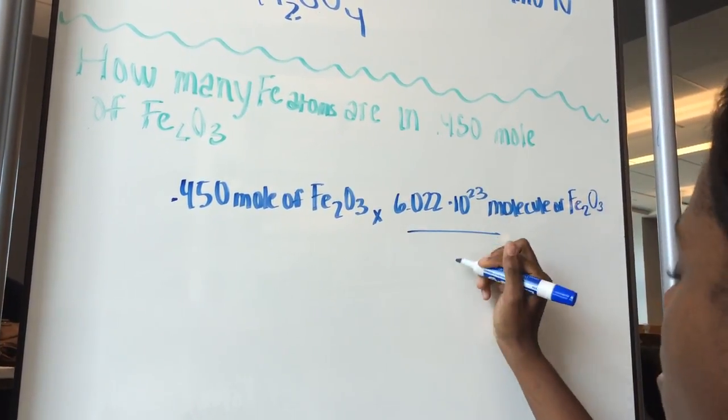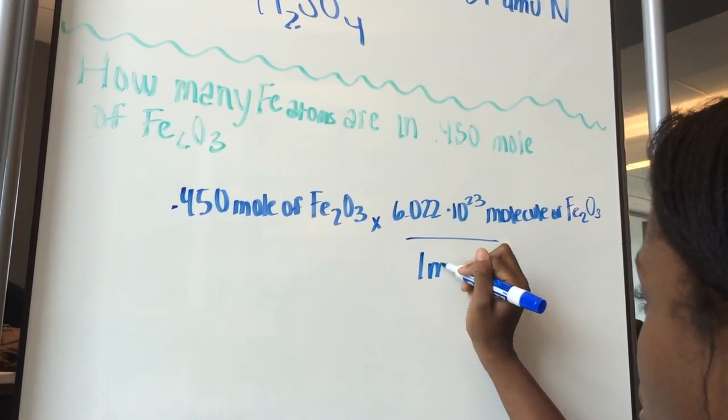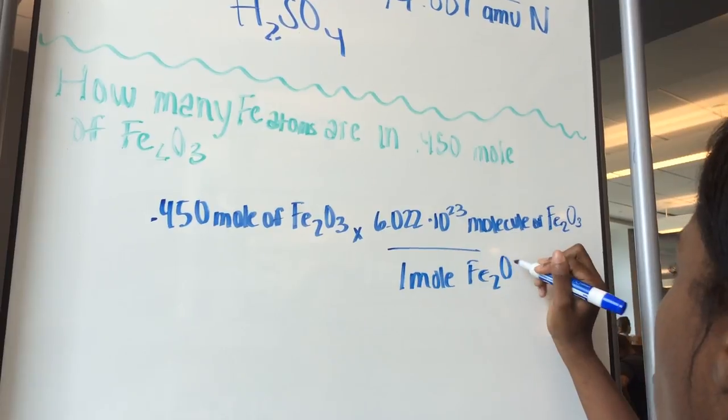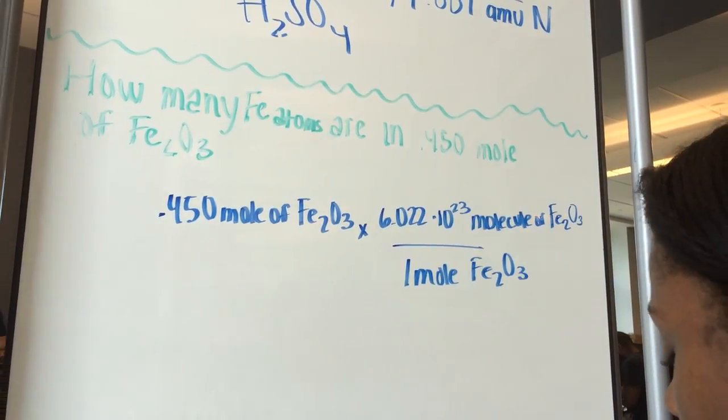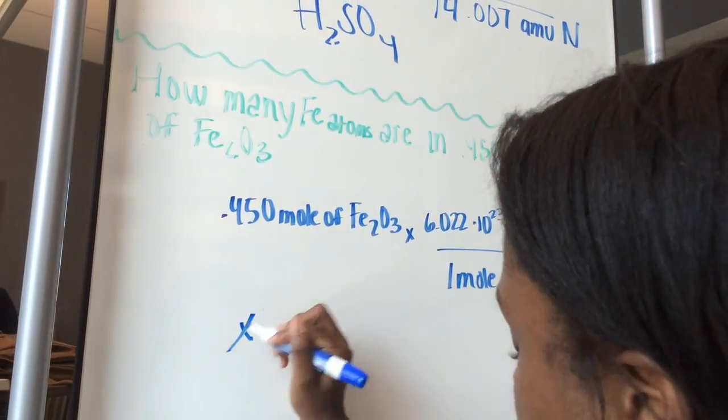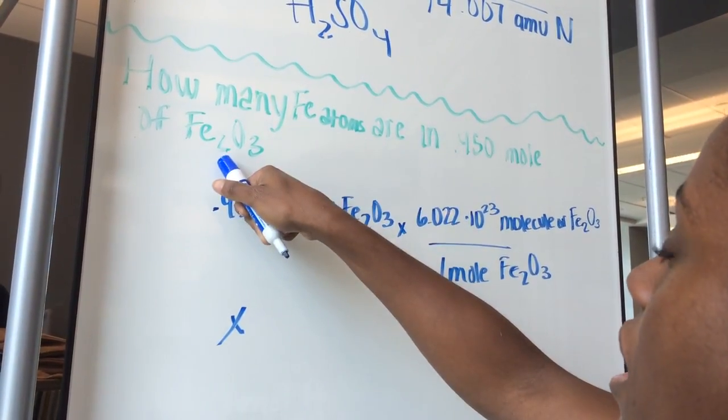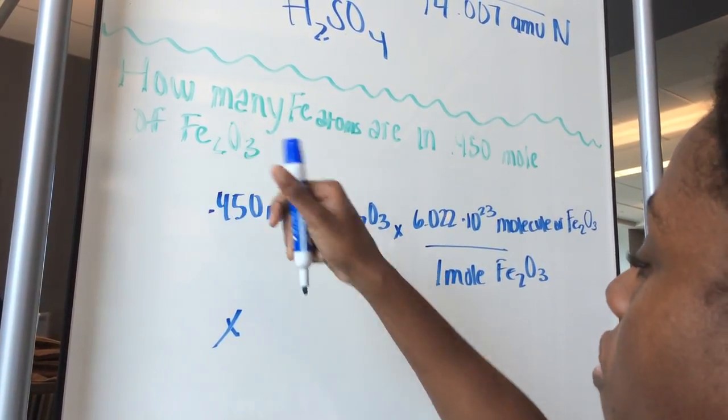And that's going to be over 1 mole of Fe2O3. So once we multiply that, our next step is going to be to multiply it by, since we're just trying to find the Fe atoms, we're looking here, we see that we have 2 Fe atoms.